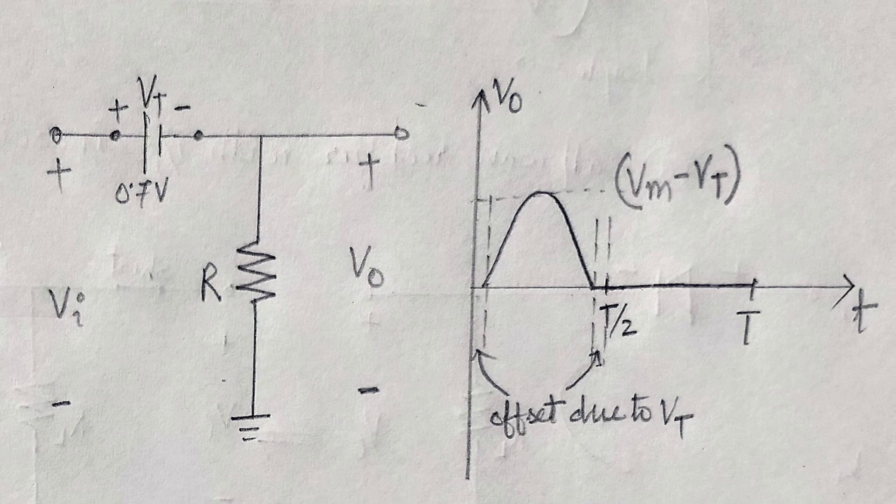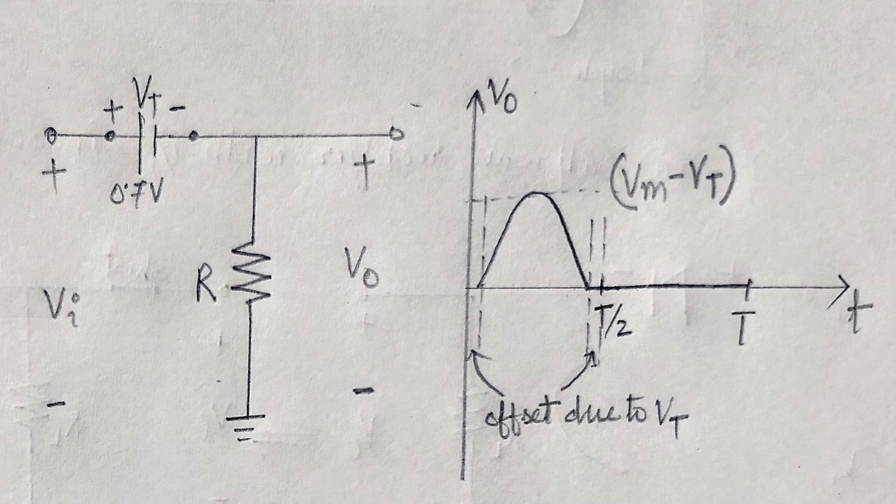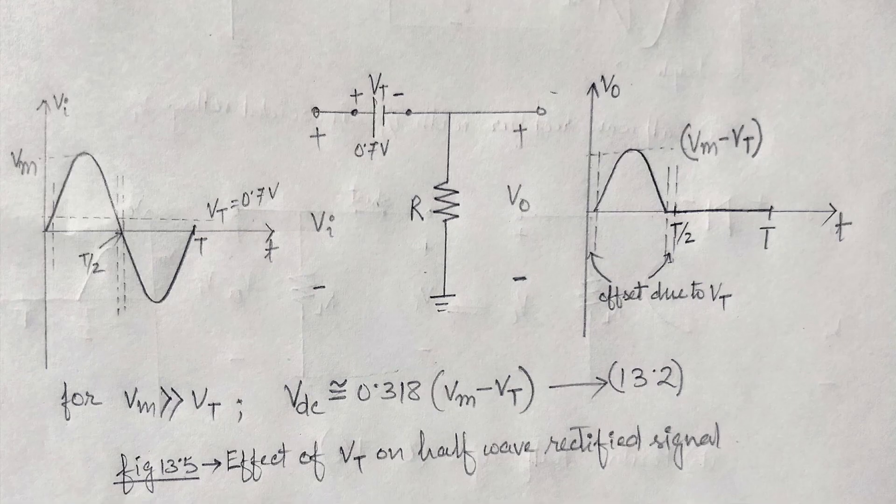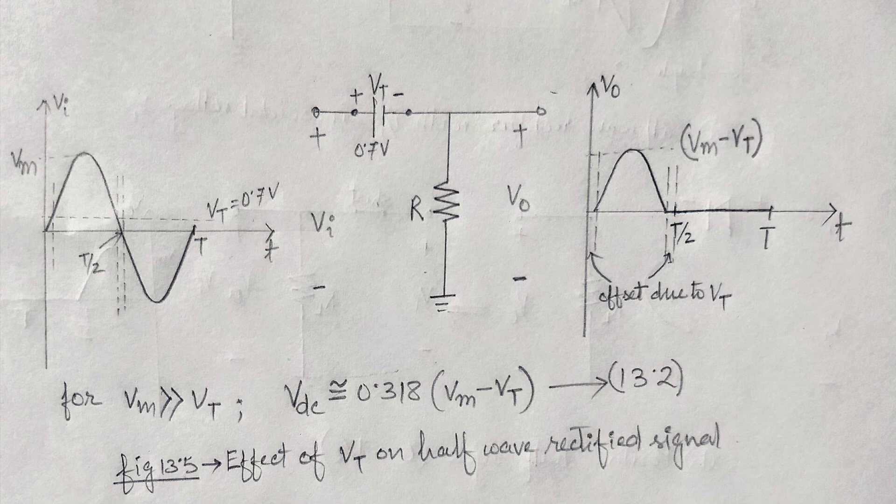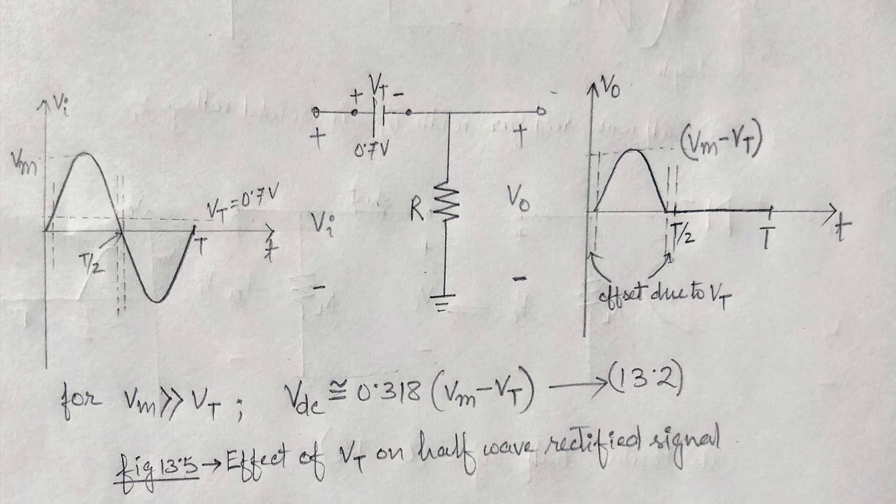The net effect is reduction in area above the axis. Therefore for a very large value of Vm in comparison to Vt, the average value of the output voltage is given by Vdc approximately equal to 0.318 Vm minus Vt.